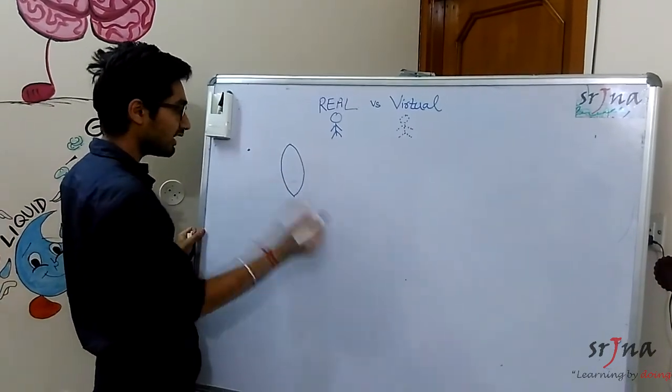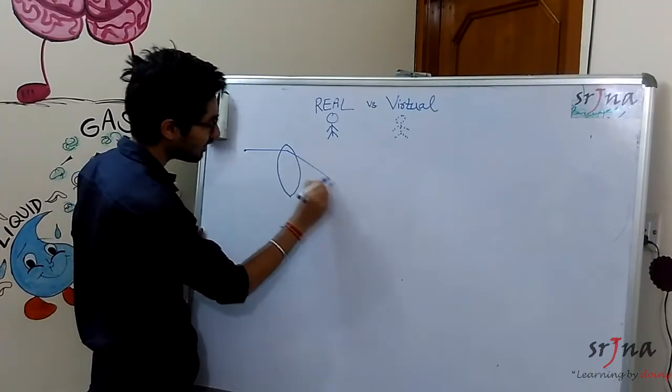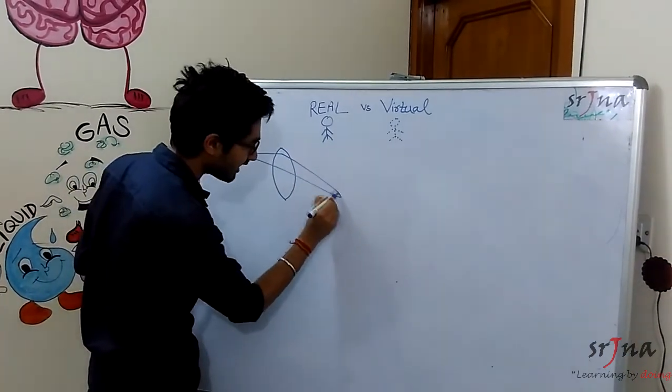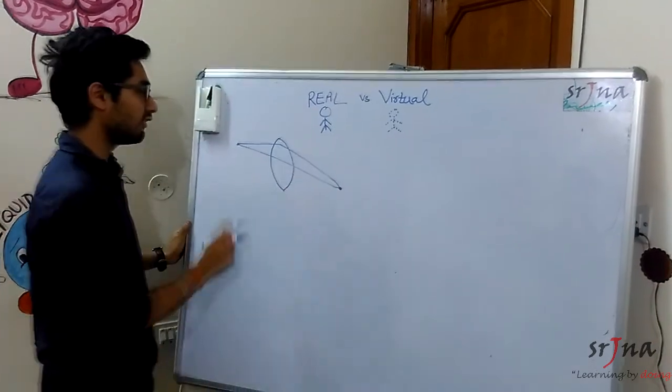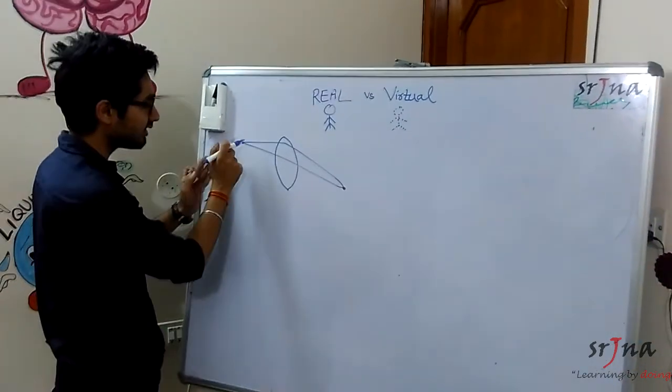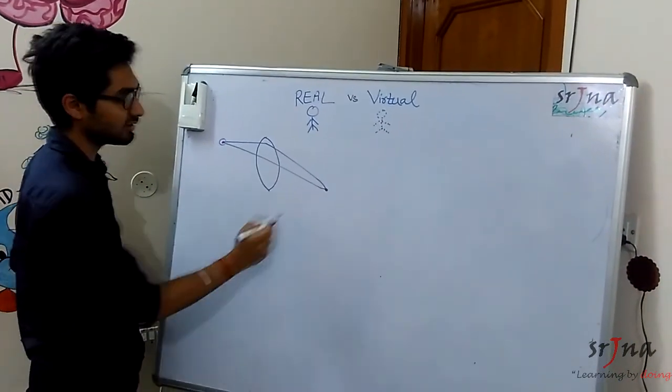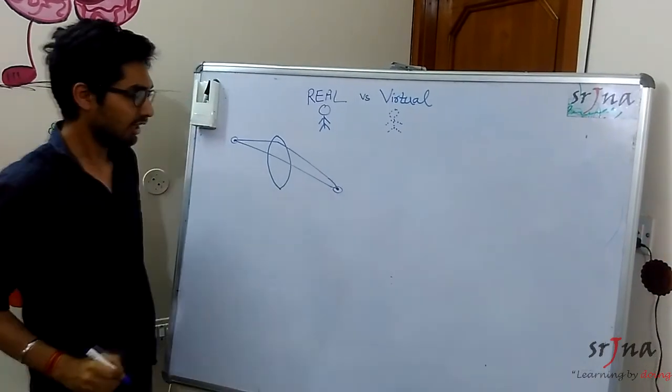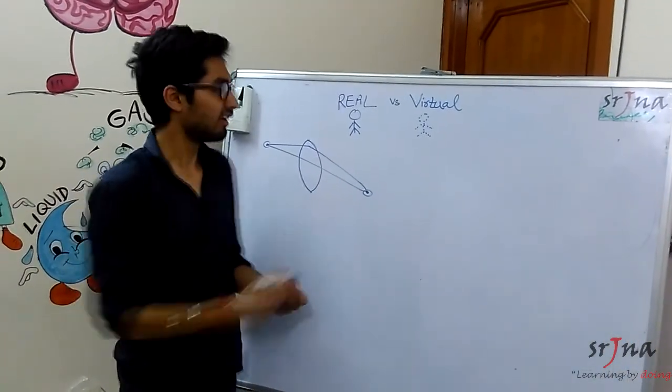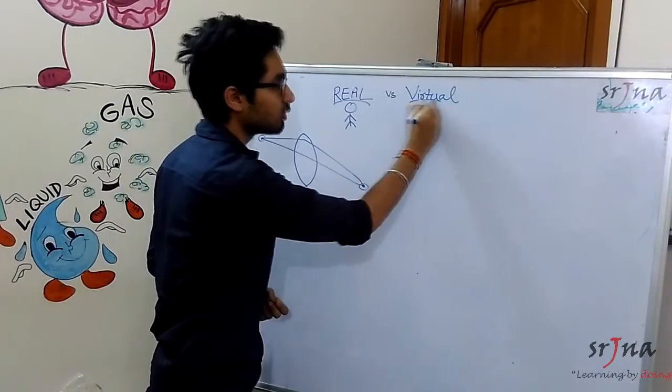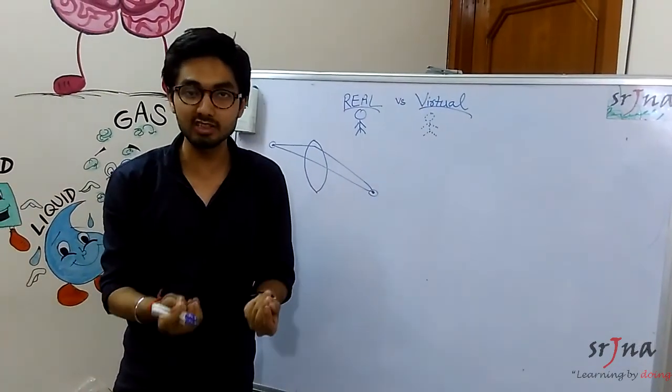In your CBSE ray diagram you must have seen that we will draw the ray diagram like this. So if this bulb is at a certain distance, this is how the image will be formed. But frankly speaking what is this image actually? Let's forget about what a real and virtual image is. Let's concentrate on how an image is formed.